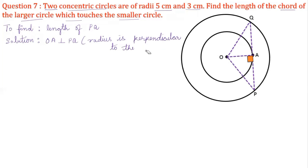OA is perpendicular to the line PQ. You have learned in 9th standard that a perpendicular drawn from the center to the chord bisects the chord. Now PQ is the chord of the bigger circle and OA is the perpendicular from the center, so OA bisects PQ — that is, AP equals AQ. The measurements given are: OQ equals 5 cm and OA equals 3 cm.